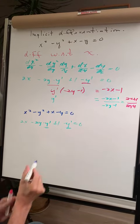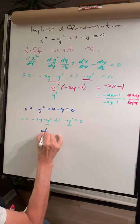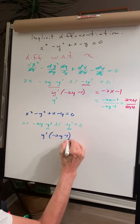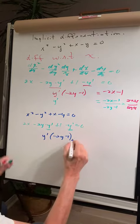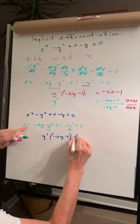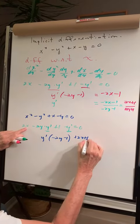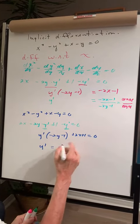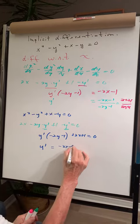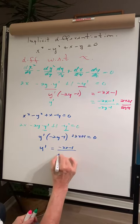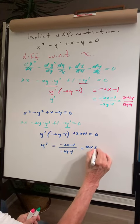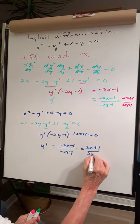Let's factor out y', so we have y'(-2y - 1) + 2x + 1 = 0. Transposing and dividing: y' = (-2x - 1)/(-2y - 1), which simplifies to (2x + 1)/(2y + 1).